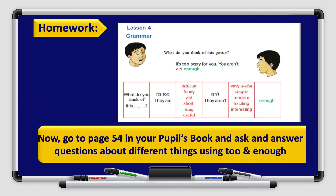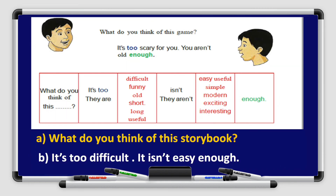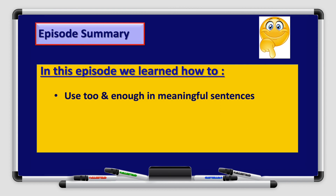Alright boys and girls, you have homework for today. Go to page 54 in your pupils' book and ask and answer questions about different things using 'too' and 'enough.' For example: What do you think of this story book? It's too difficult — it isn't easy enough. We have reached the end of today's episode. We learned how to use 'too' and 'enough' in meaningful sentences. Thank you for watching and I hope to see you in the next one. Goodbye.